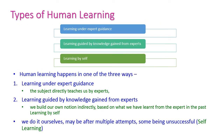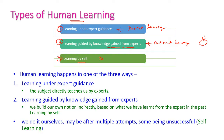Now, the types of human learning. There are three types. The first is learning under expert guidance — using a teacher or expert to learn something, called direct learning. The second is learning guided by knowledge gained from experts — applying our knowledge to new circumstances, called indirect learning. The third is learning by self, that is, do-it-yourself learning.